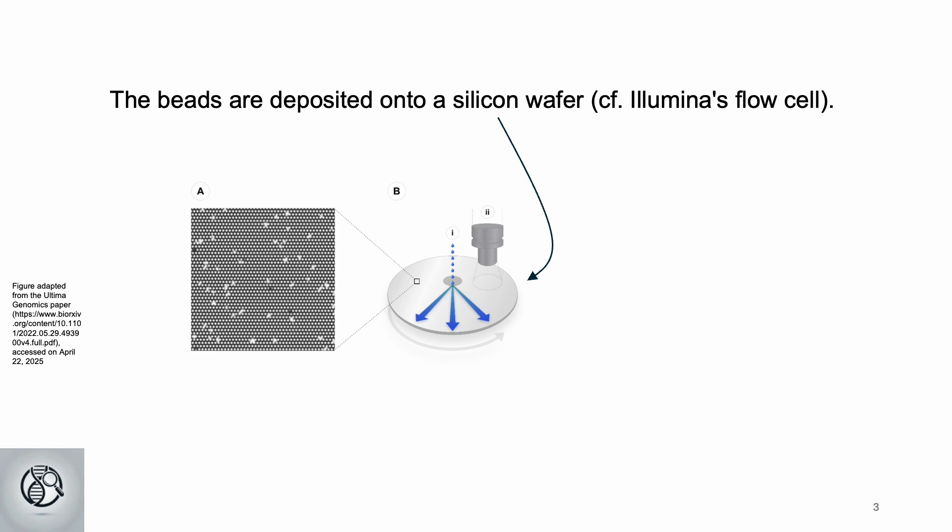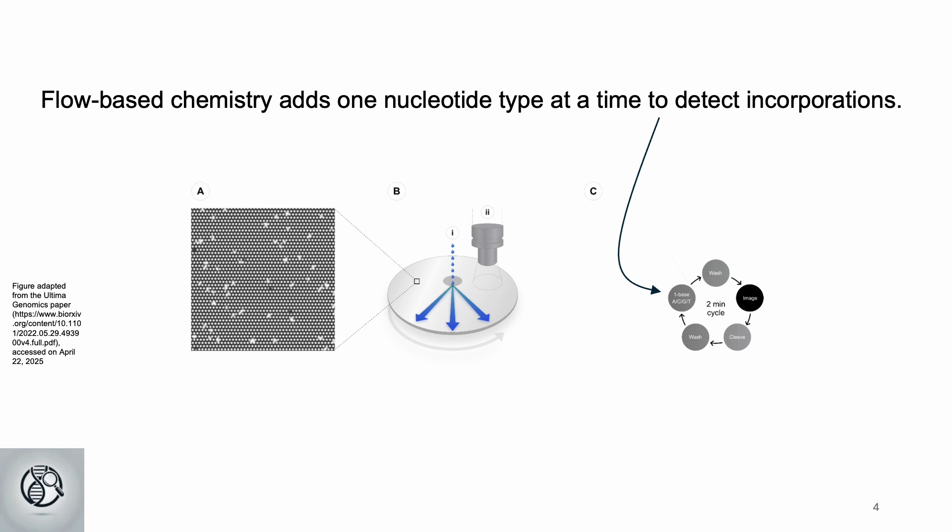Founder Gilad Almogy's semiconductor background heavily influences this approach. The UG100 uses flow-based sequencing similar to the method pioneered by 454 Life Sciences.